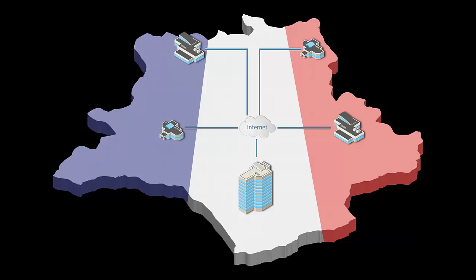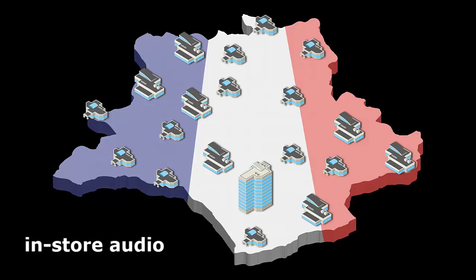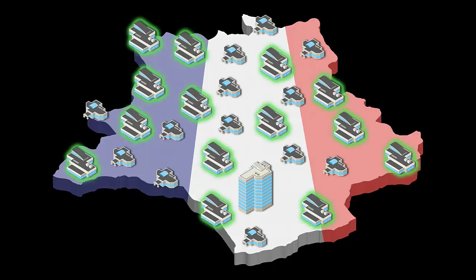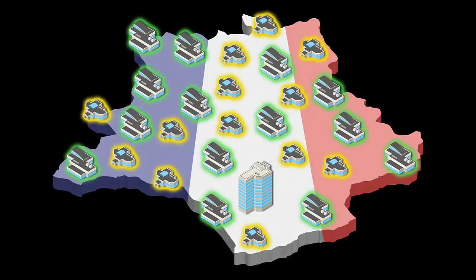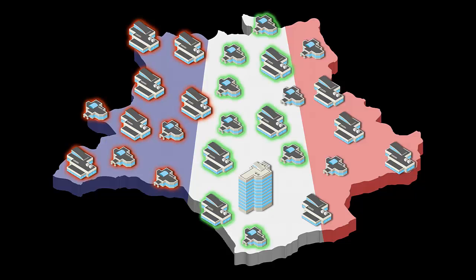A typical use of IP audio streaming would be in the retail vertical, known as in-store audio. The usual shopping center chain has many branches all over the country, and thanks to the IP network you can manage the audio content from one central point. Zones could be created according to the size of the branches — large ones and small ones — or according to the region's location, such as west, central, or east.